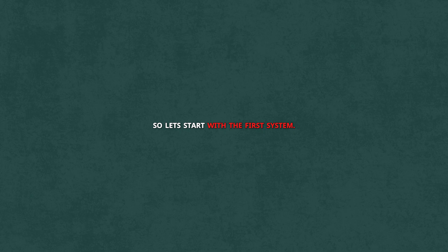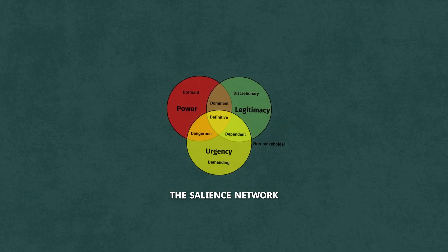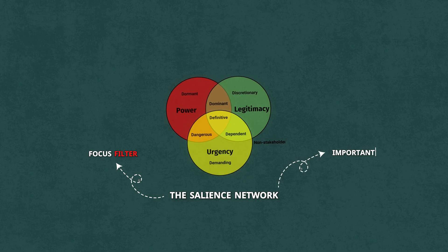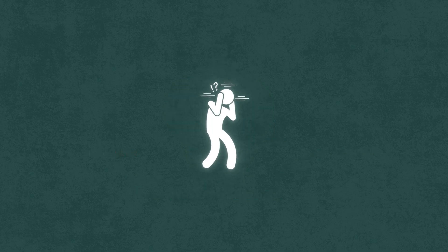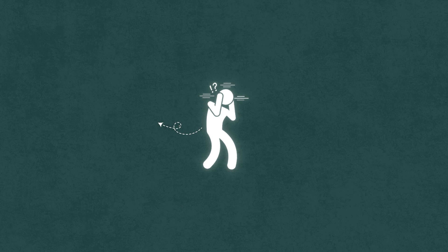So let's start with the first system, the salience network. Think of it as your brain's focus filter. It's the part that decides what's important and what's just background noise. Most people, their salience network is basically asleep.